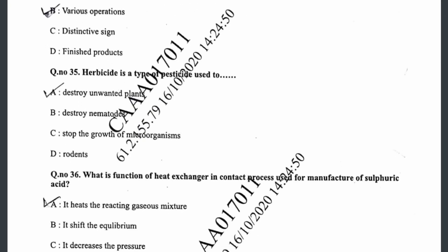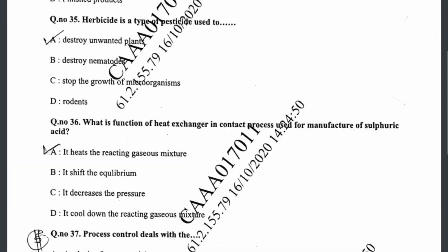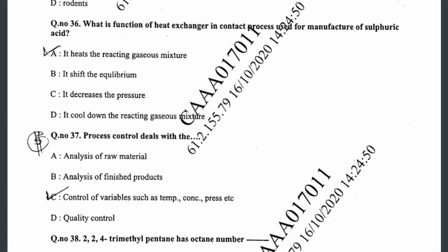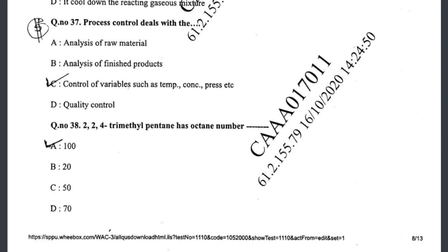Question thirty-six: the function of a heat exchanger in the contact process used for manufacture of sulphuric acid is option A — it heats the reacting gas mixture in the heat exchanger. Question thirty-seven: process control deals with control of variables such as temperature, concentration, pressure, etc. Question thirty-eight: 2,2,4-trimethyl pentane has an octane number of 100.